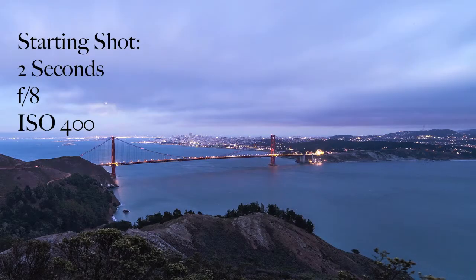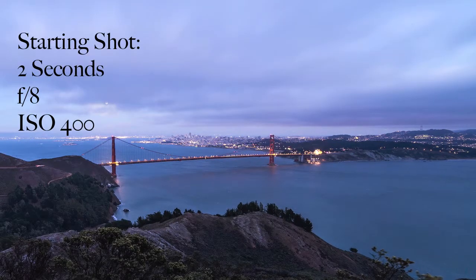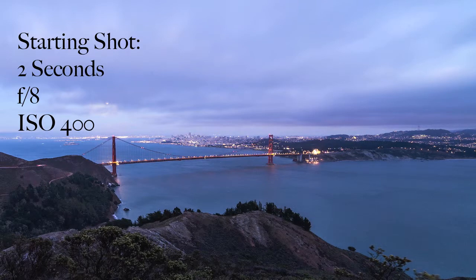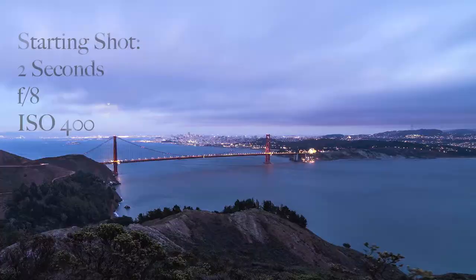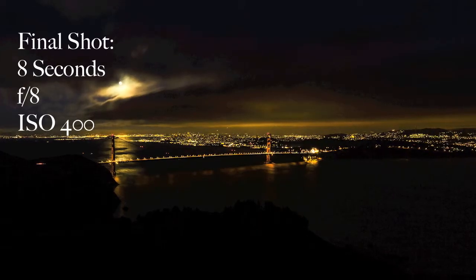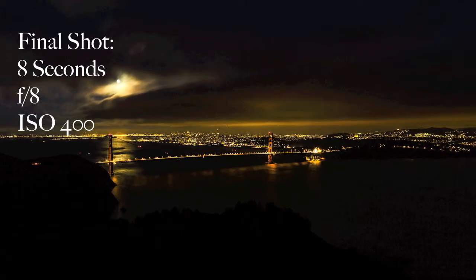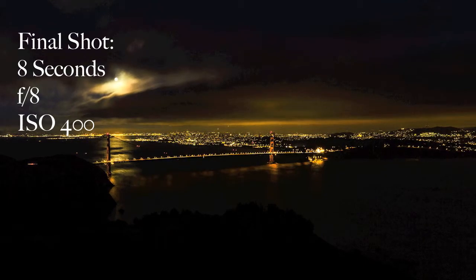Now as an example, this is the exposure of the starting shot from our bulb ramp. Shutter speed is 2 seconds, aperture is 8, and ISO is 400. And note that in the final exposure, the only thing that has changed is the shutter speed, which is now 8 seconds.